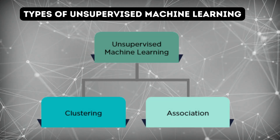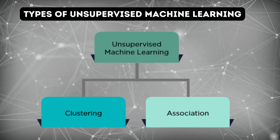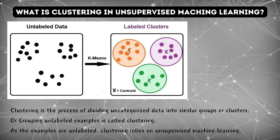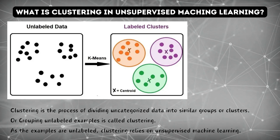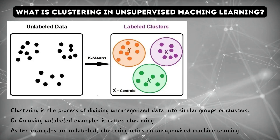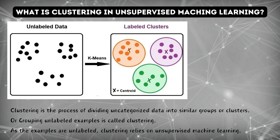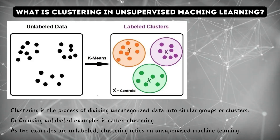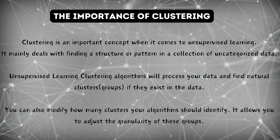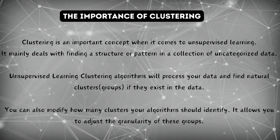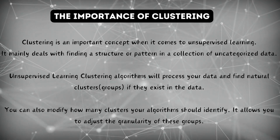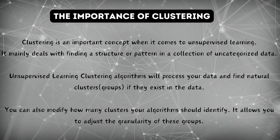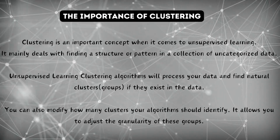The two types of unsupervised learning are clustering and association. Clustering is the process of dividing uncategorized data into similar groups or clusters. Grouping unlabeled examples is called clustering. As the examples are unlabeled, clustering relies on unsupervised machine learning.